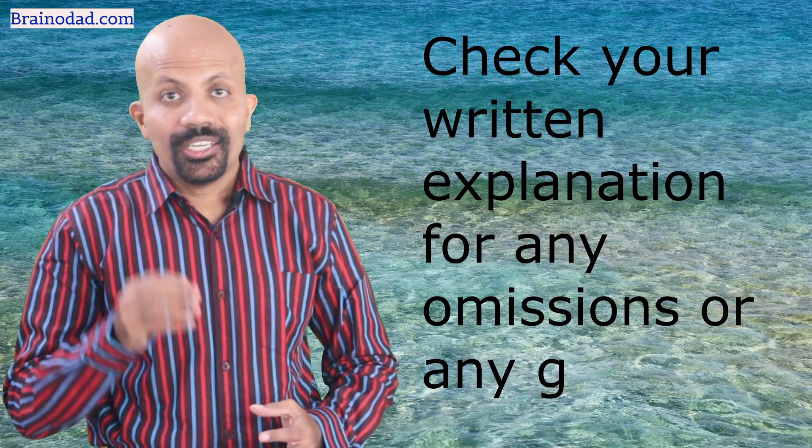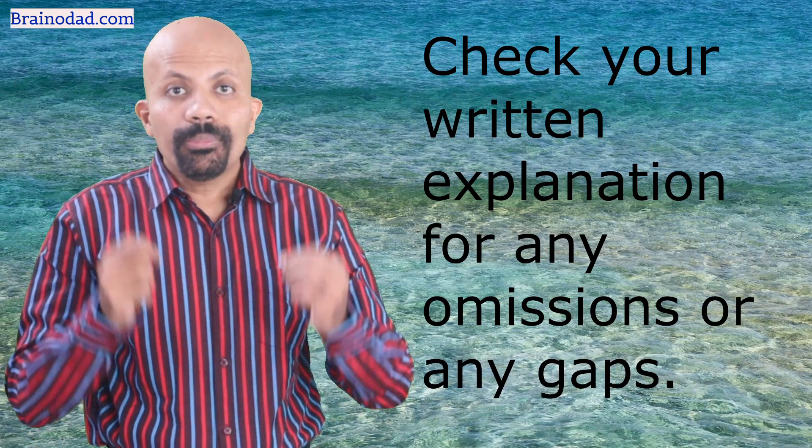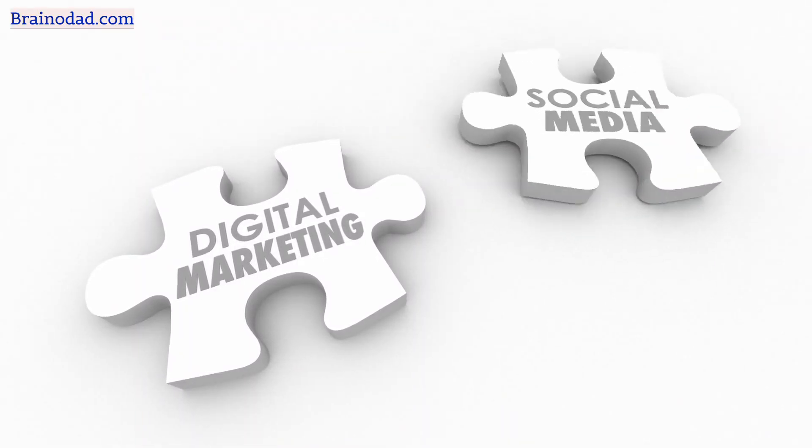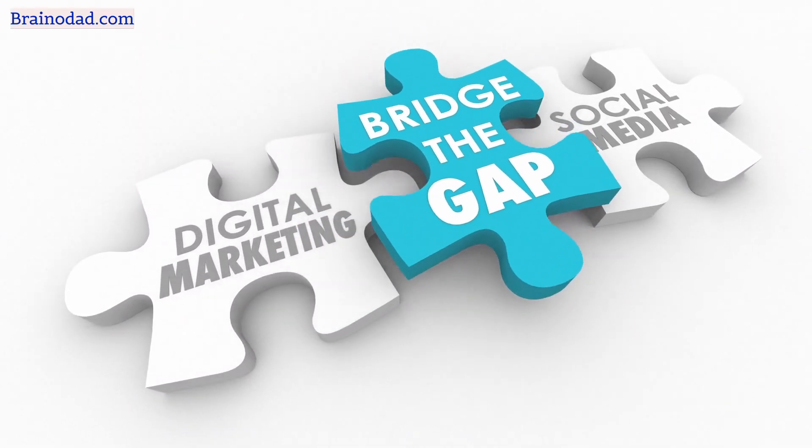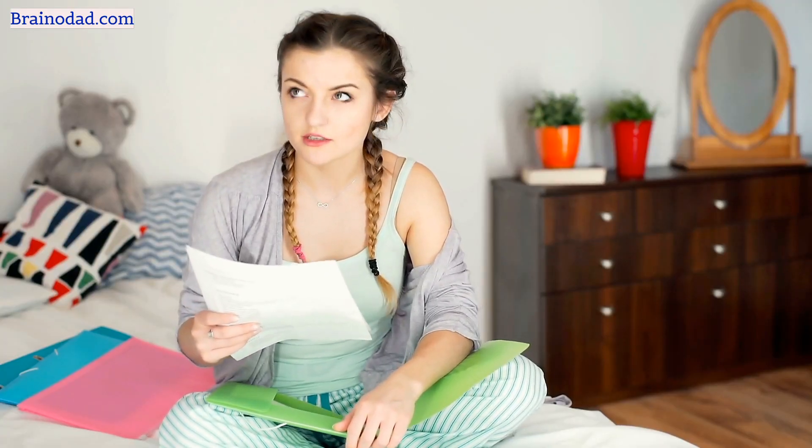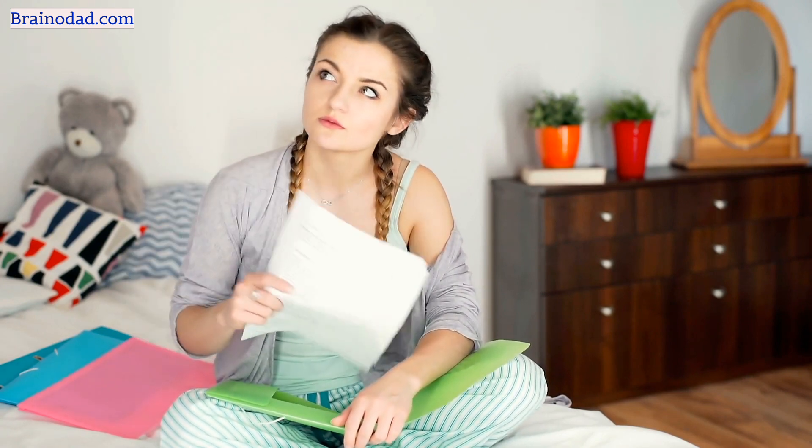The third step is to check your written explanation for any omissions or gaps. Your explanation may not cover all the points in your first attempt. Take note of all those points which got left out or were difficult to express. Go through your textbook or source material once more and read it until you get those particular concepts clear in your mind. This way you can fill the knowledge gaps, and by now you would have become thorough in this topic.